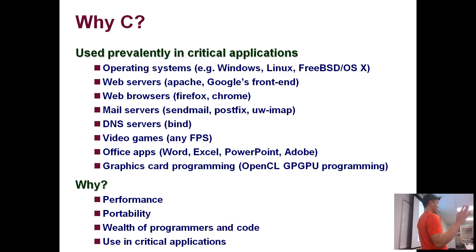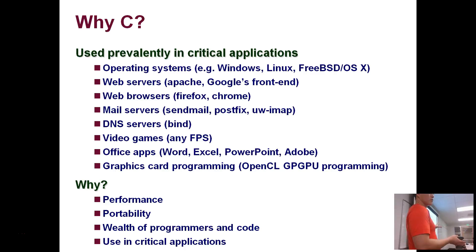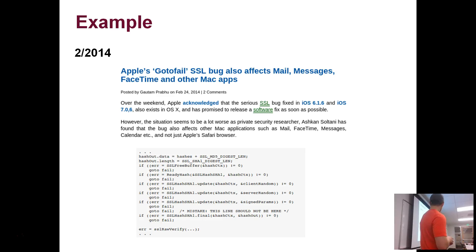C is used prevalently — here is a list of things mainly using C or C++: operating systems, web servers, browsers, mail servers, DNS servers, video games, office apps, and graphics card programming. The reasons are performance, portability, and the wealth of programmers and code. Although people are stopping teaching C, we're not, and these applications all rely on variants of C.